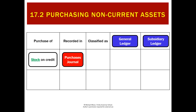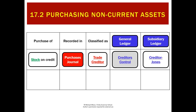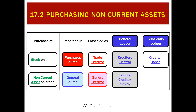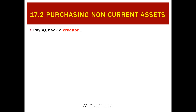To summarize: buying stock on credit goes in the purchases journal; the creditor is a trade creditor. In the general ledger we have creditors control, and we create a subsidiary ledger account — for example, a creditor named Jones gets a Jones account in the subsidiary ledger. Buying a non-current asset on credit goes in the general journal; the creditor is a sundry creditor. In the general ledger, the creditor (say, Smith) gets their own account — we don't use creditors control and leave the subsidiary section blank.